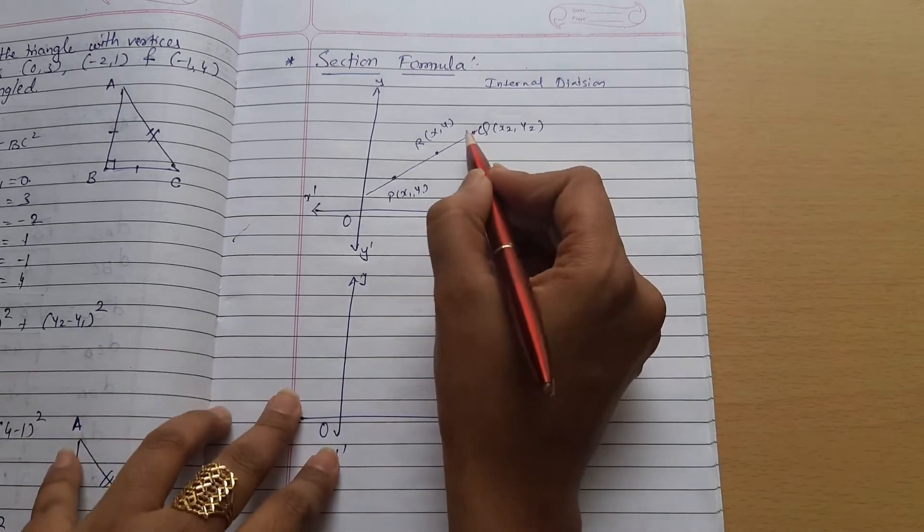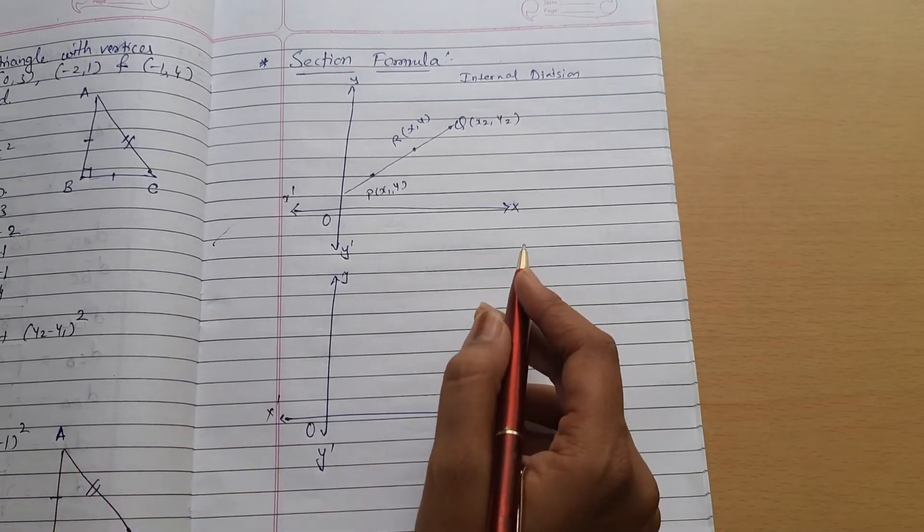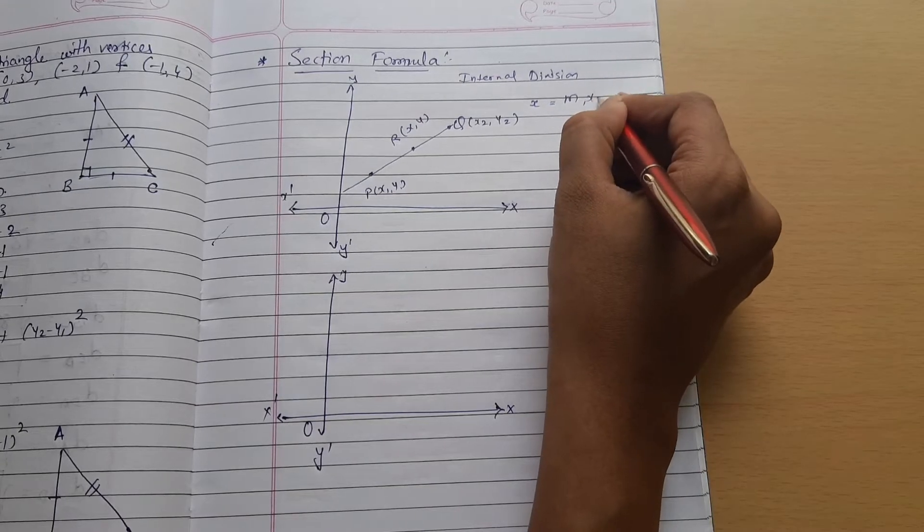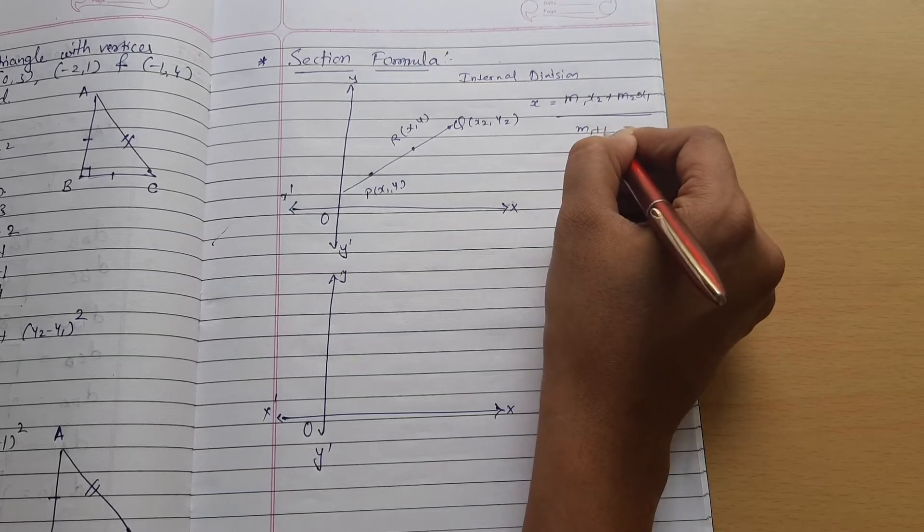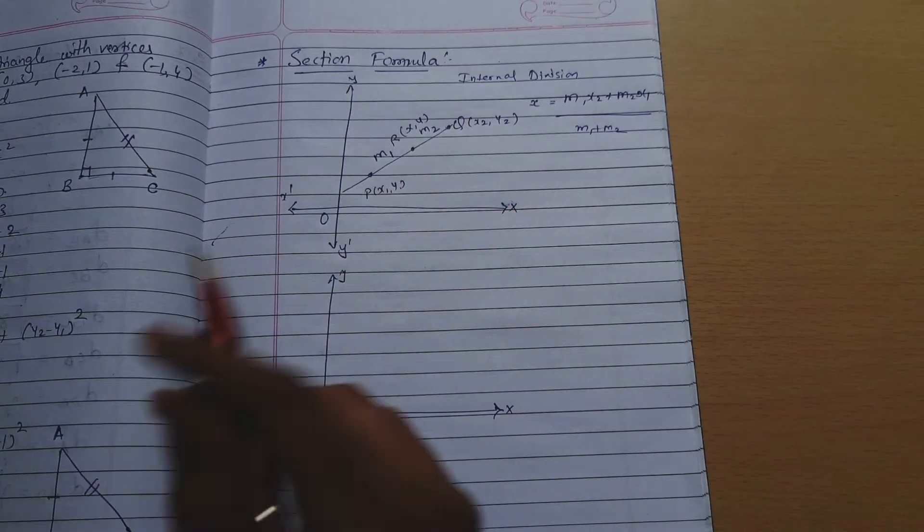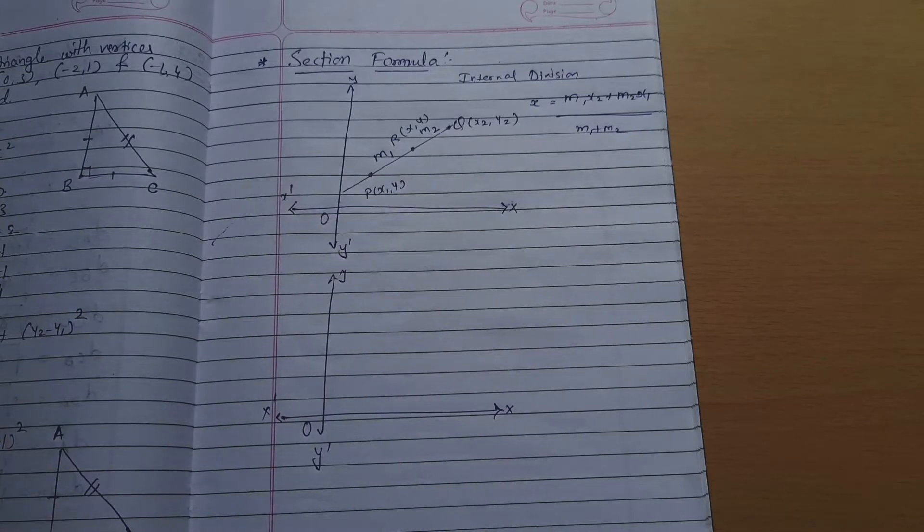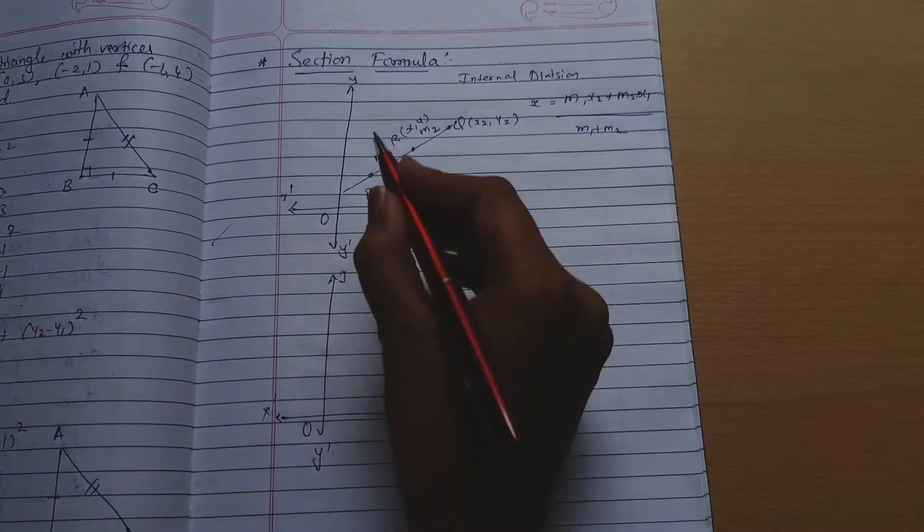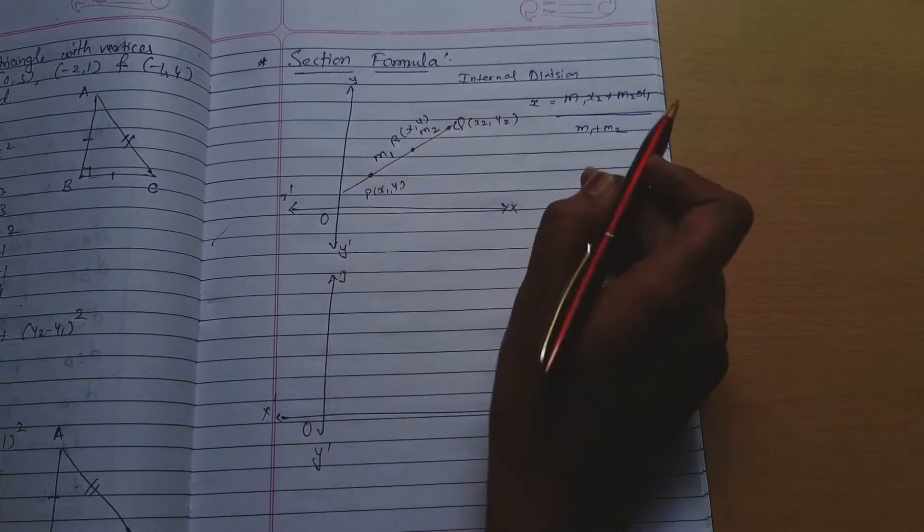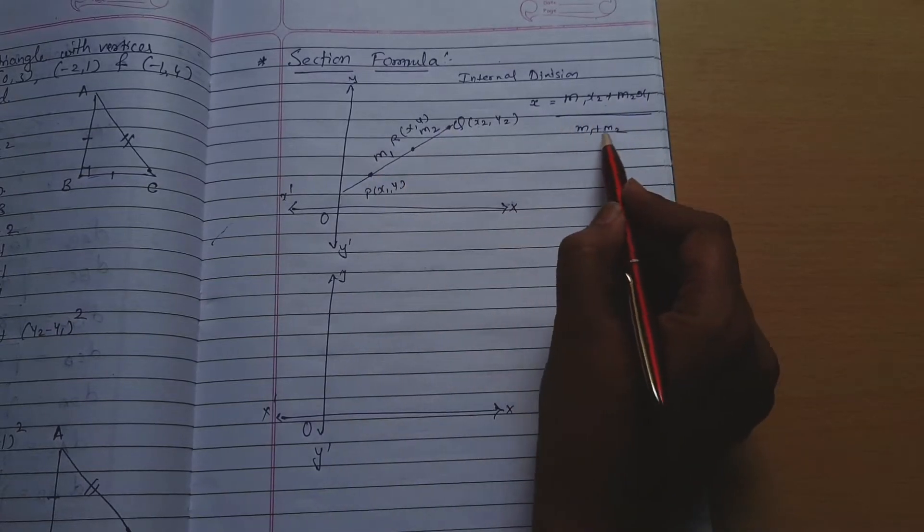When two points are given, if you want to find x coordinate, then x is equal to m1 x2 plus m2 x1 divided by m1 plus m2. So the formula is x equals m1 x2 plus m2 x1 divided by m1 plus m2.